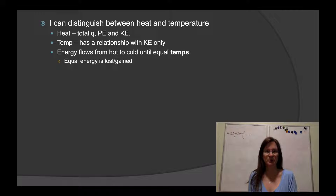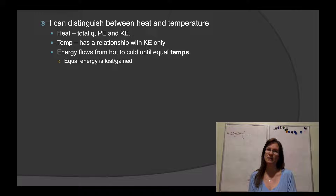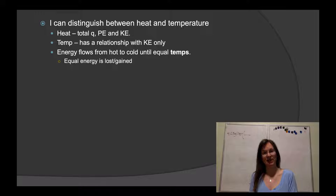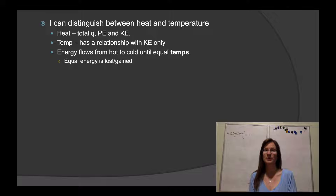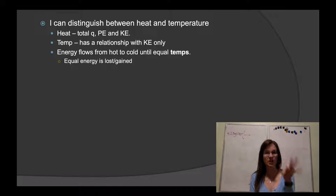The first learning target is: I can distinguish between heat and temperature. Heat is total energy — kinetic plus potential — of the system, where temperature is just kinetic energy. Temperature is that measure of average kinetic energy, so if temperature is changing, kinetic energy is changing. But you can have a scenario where heat changes and temperature doesn't, and that occurs when you have a potential energy change. Potential energy has to do with the position and arrangement of bonds within a compound — when you break and make new bonds, that's when potential energy changes.